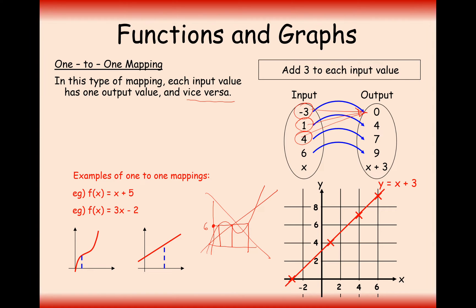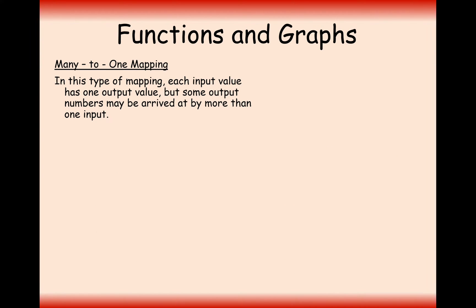The type of mapping that that would be is a many-to-one mapping. Let's look at a many-to-one mapping. In this type of mapping, each input value has one output value, but some output numbers may be arrived at by more than one input.